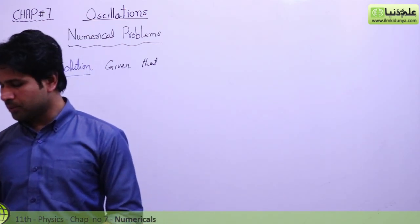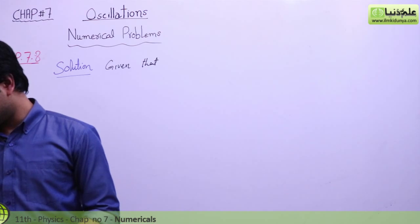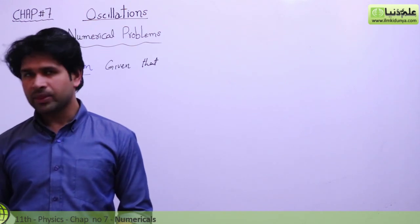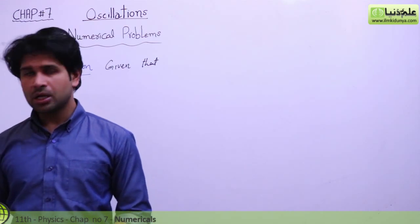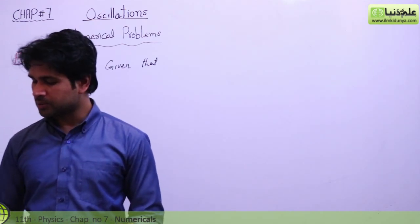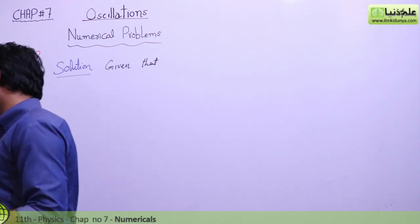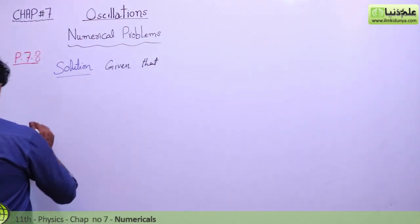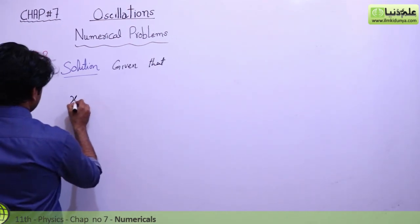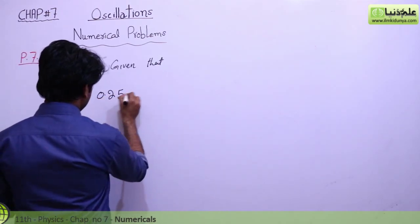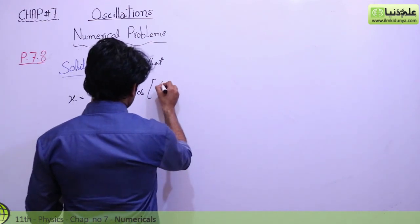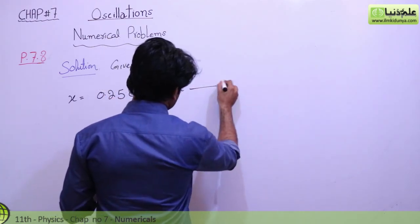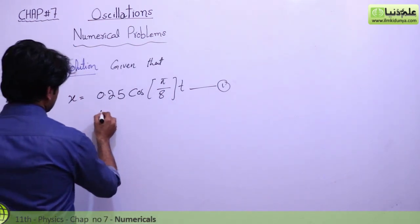To repeat: find the amplitude, frequency, and period of a vibrating object at the end of a spring if the equation for its position as a function of time is x equals 0.25 cos(π/8·t). What is the displacement after 2 seconds? In the given data, we have x = 0.25 cos(π/8·t) — we will call this equation 1 — and time t equals 2 seconds.